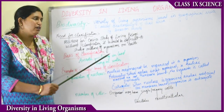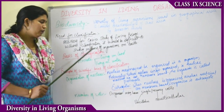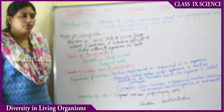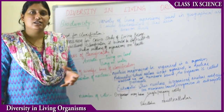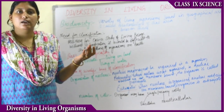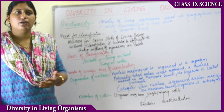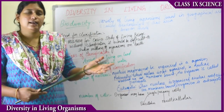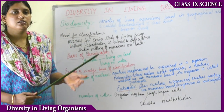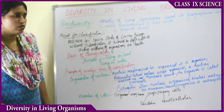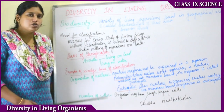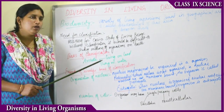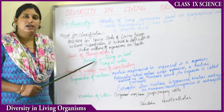Without classification, it would be difficult to study millions of organisms on Earth. Without a proper basis of classification, it would be difficult to study the characteristics of each and every organism, because there are millions of species. Classification makes the study of all these organisms easier.